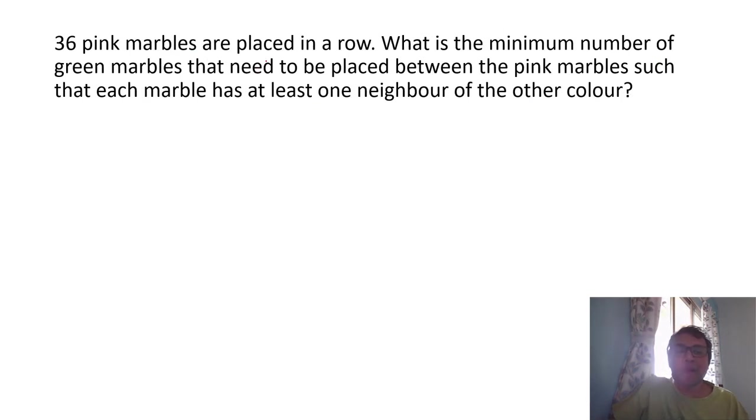36 pink marbles are placed in a row. The idea is that minimum number of green marbles we want. So that at least one neighbor of each color, each marble has one neighbor of each color. Since for your minimum, more of green marbles, we first put a pink marble. Now next to this pink marble has to be green marble because at least one neighbor of other color. So we have green.